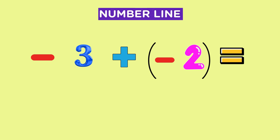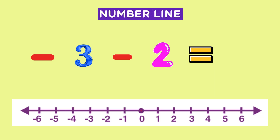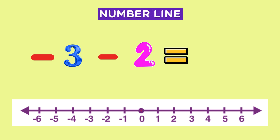Now let's try negative 3 plus negative 2. Remember, whenever we have a positive and a negative sign immediately beside each other, they equate to a minus sign. So we are really calculating negative 3 minus 2. We start at 0 and move 3 steps to the left for the negative 3 — 1, 2, 3 — and land on negative 3. Then we go 2 more steps to the left for the minus 2 — 1, 2. Therefore, we end at minus 5. So minus 3 minus 2 equals negative 5.